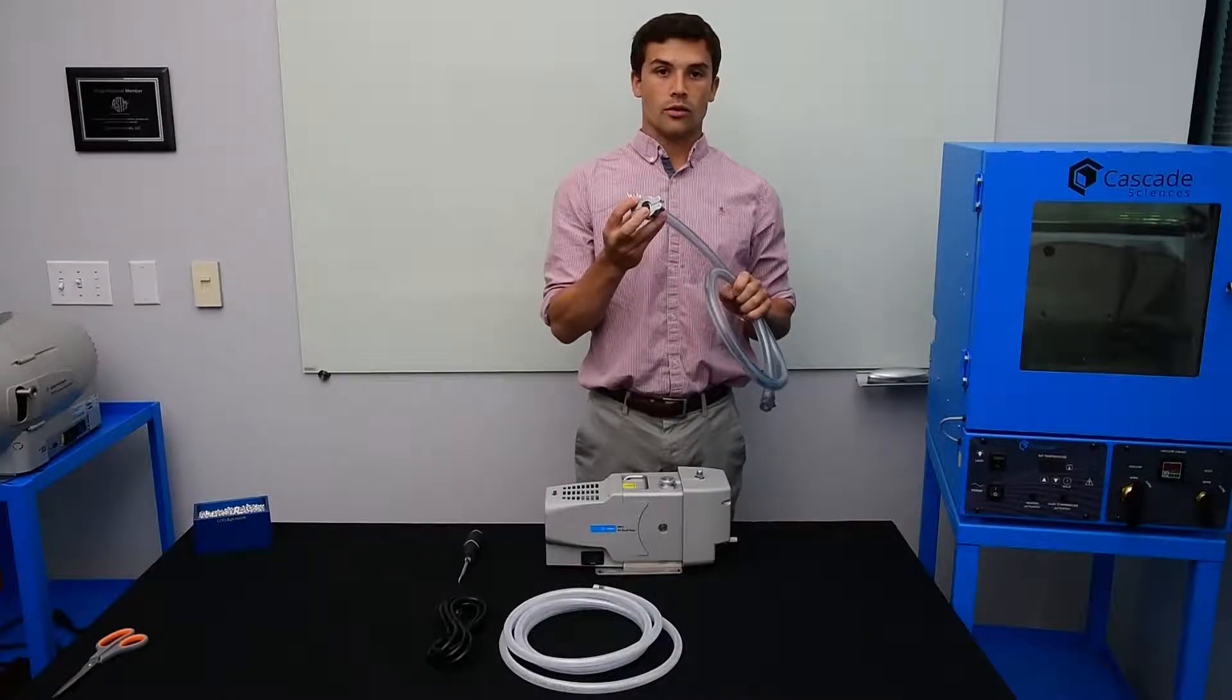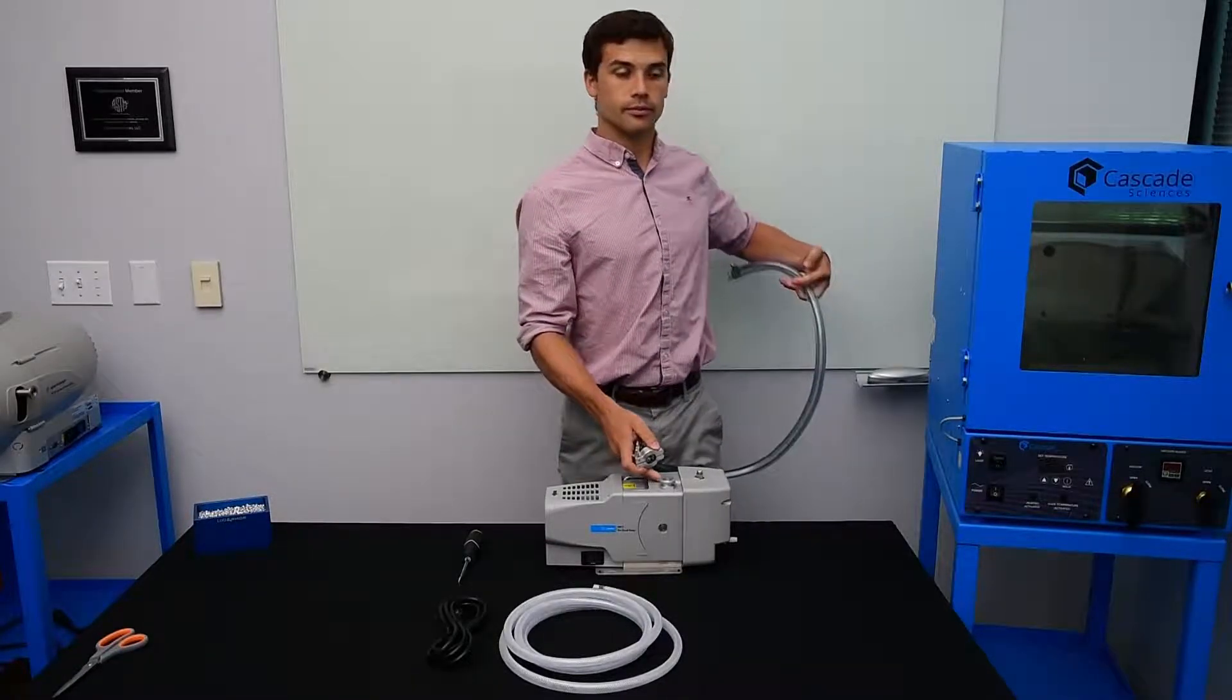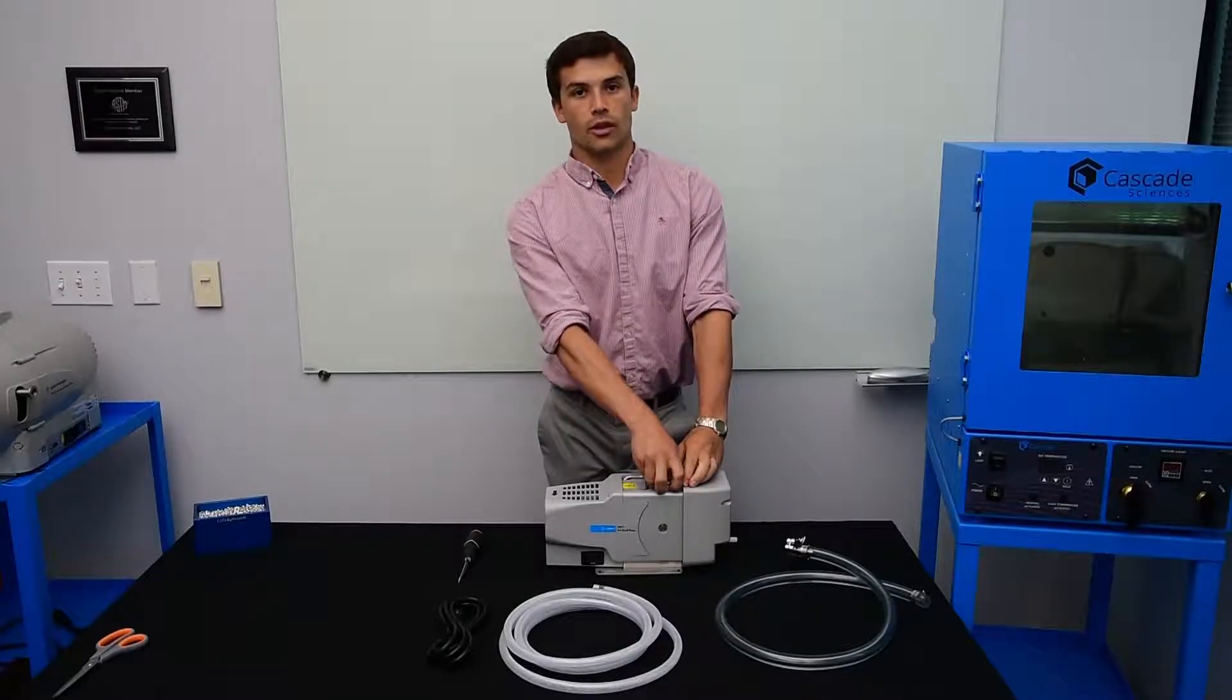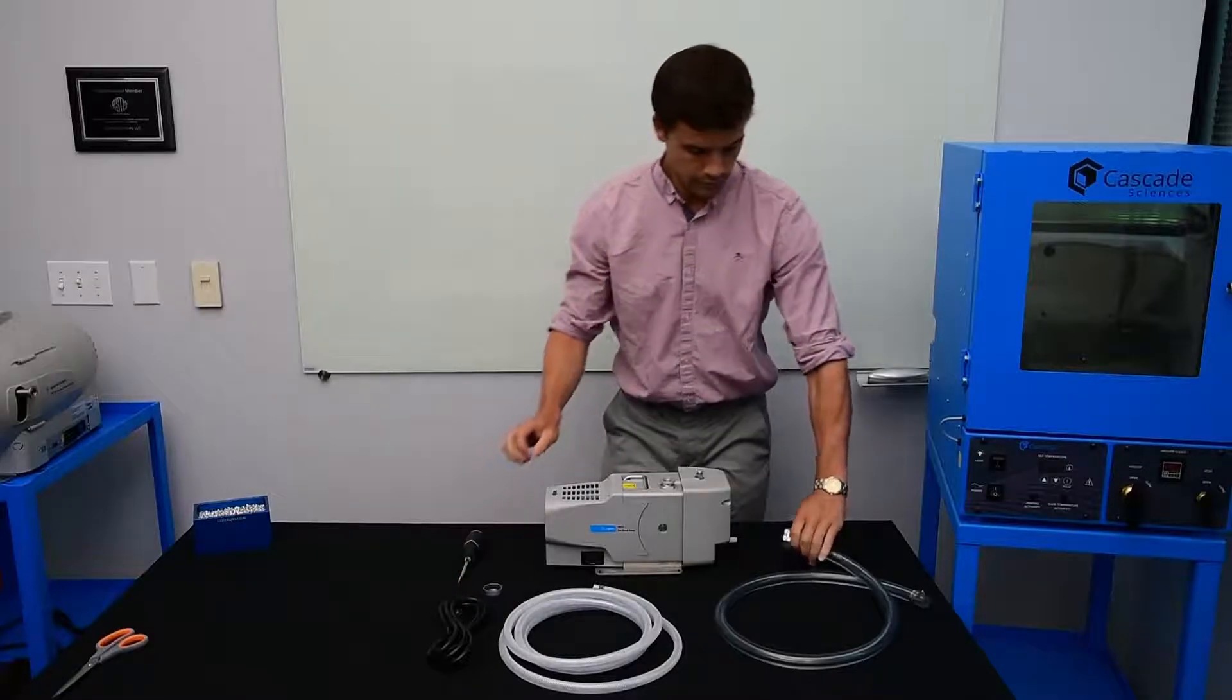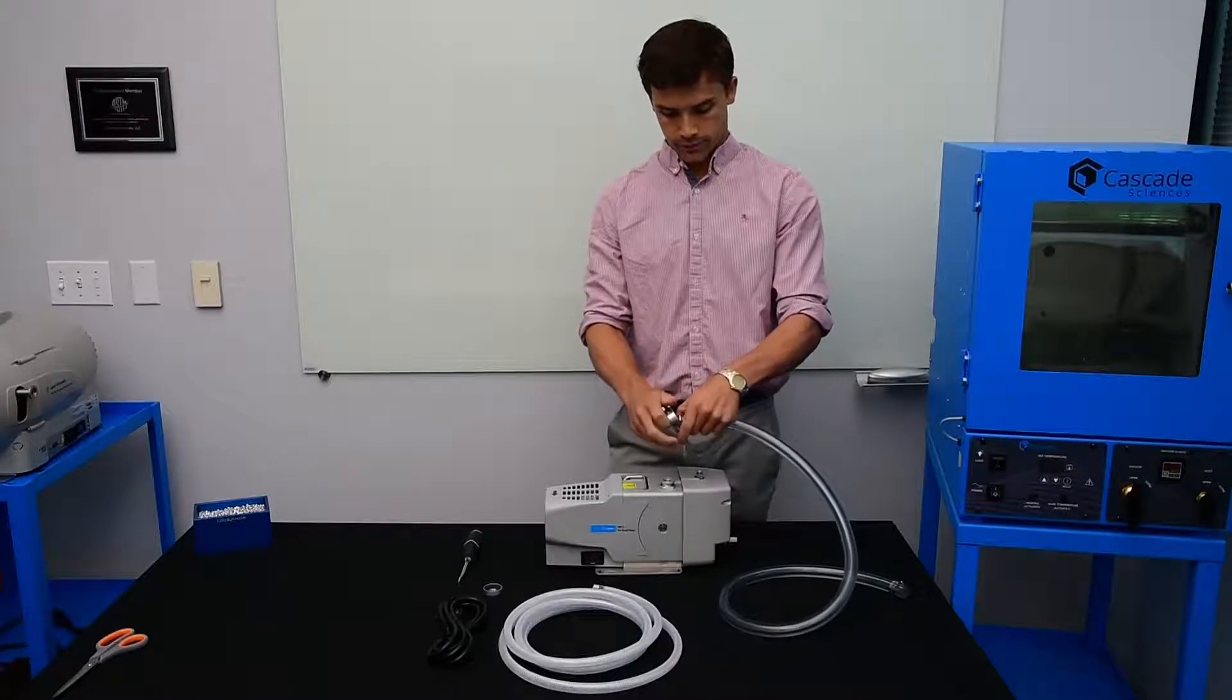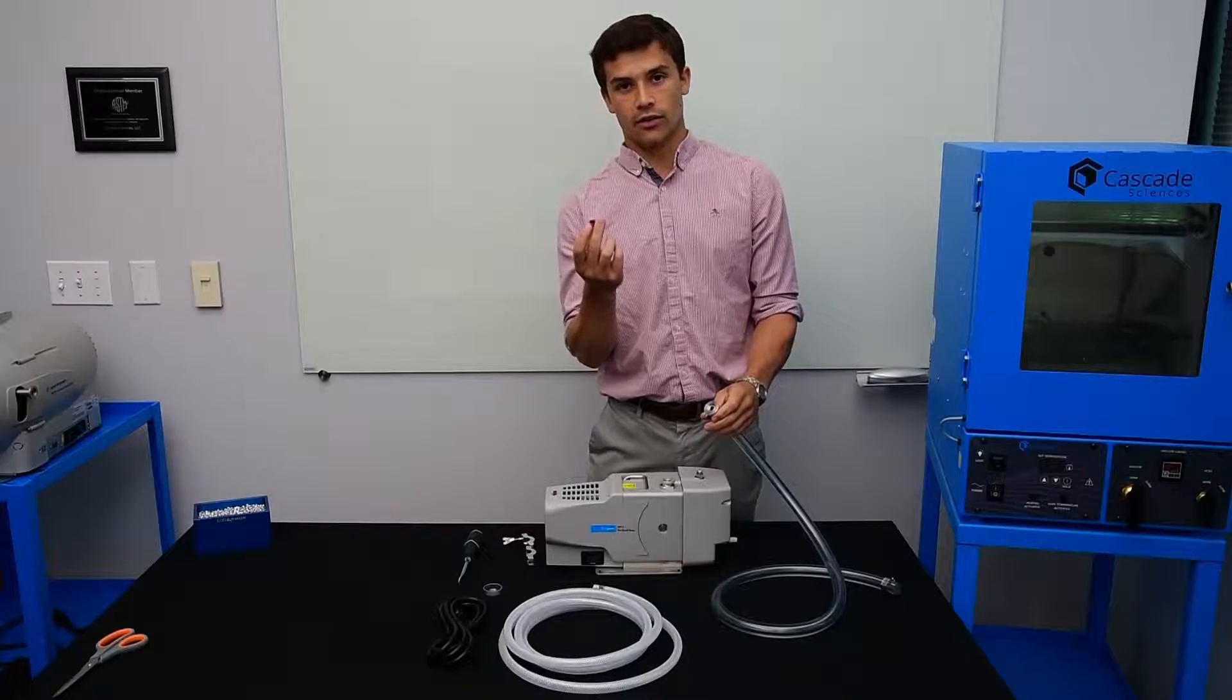We're going to start with a vacuum hose. This is going to connect from the pump to the oven. The pump ships with a plastic cover that we're going to go ahead and remove. And this is a KF-16 quick clamp. Make sure you don't lose the centering ring.